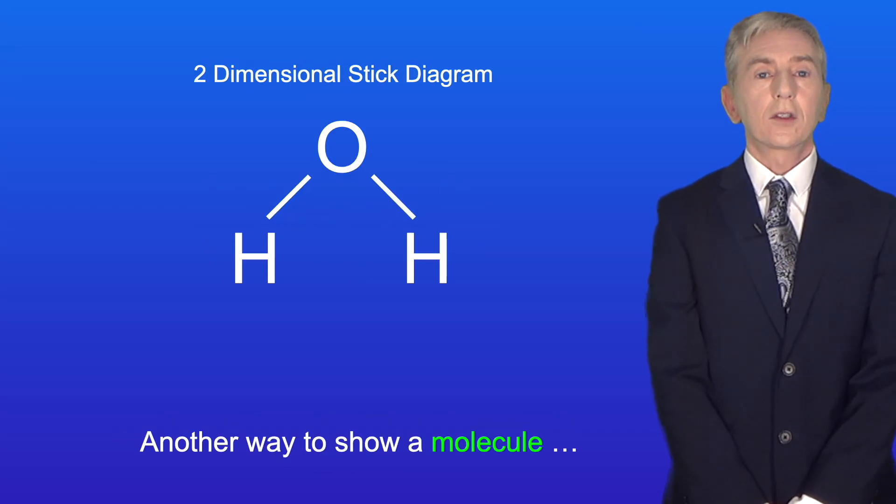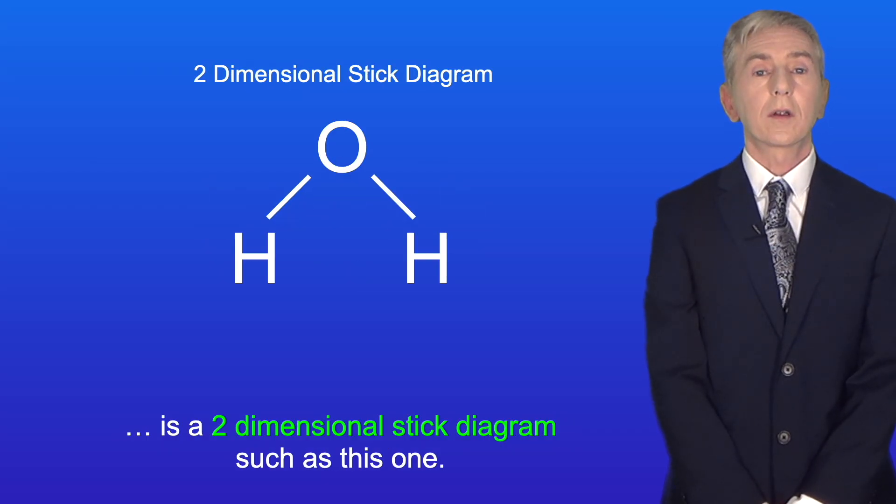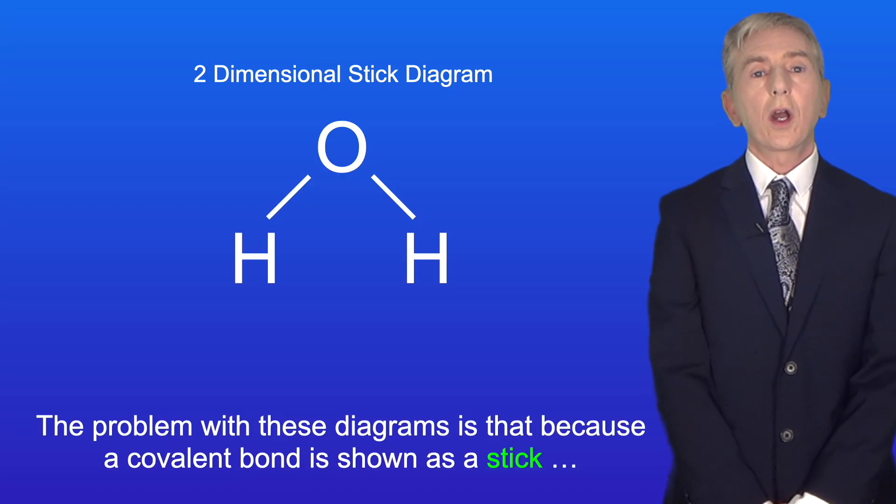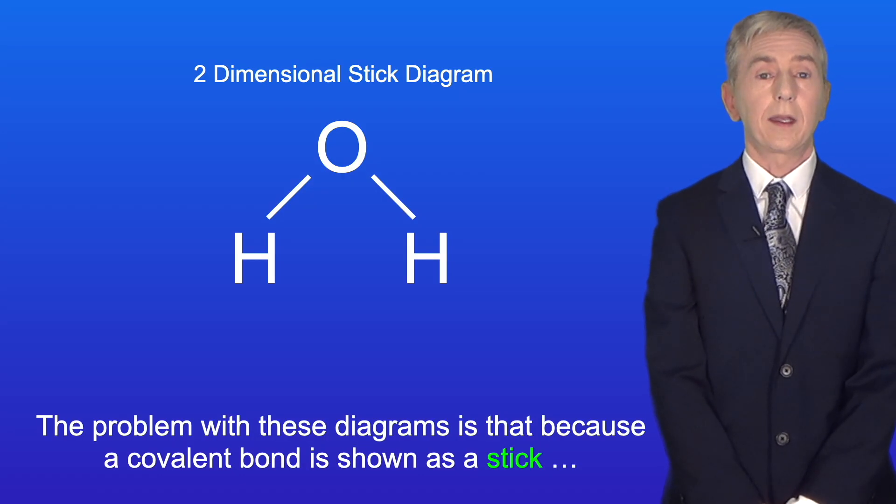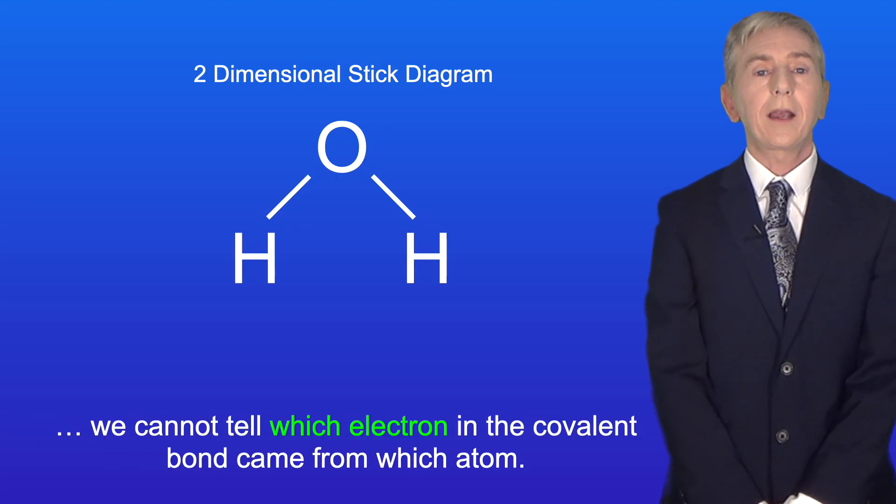Now another way to show a molecule is a two-dimensional stick diagram such as this one. The problem with these diagrams is that because a covalent bond is shown as a stick, we cannot tell which electron in the covalent bond came from which atom.